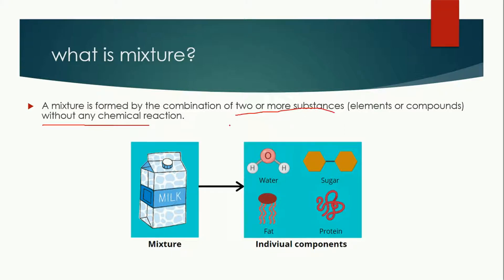Here is an example of a mixture: milk. Milk is a mixture and it contains water, sugar, fat, and protein. These are the individual components which combine together to form milk without any chemical reaction. This means if you want to separate these things from the milk, you can easily do that.